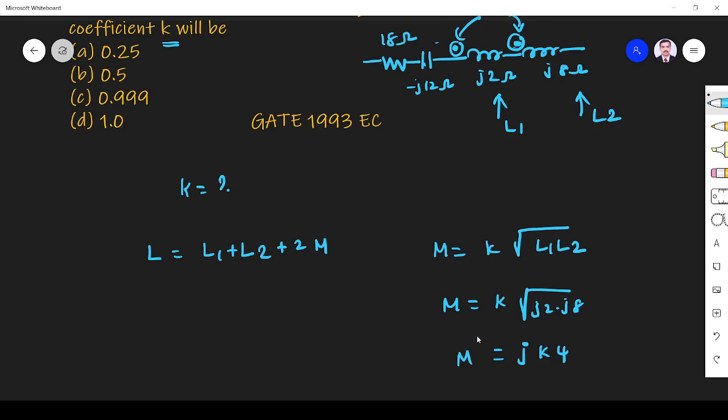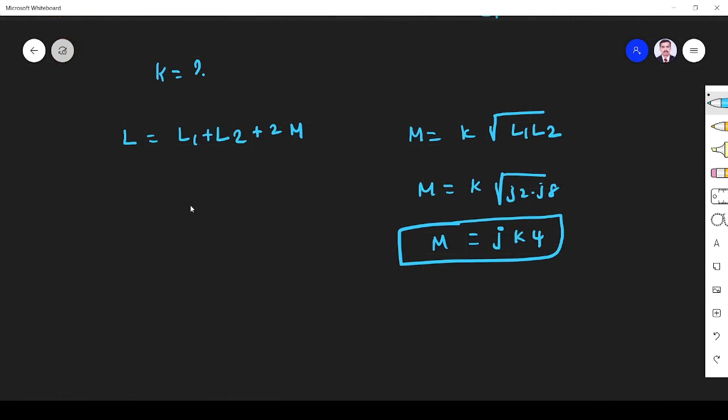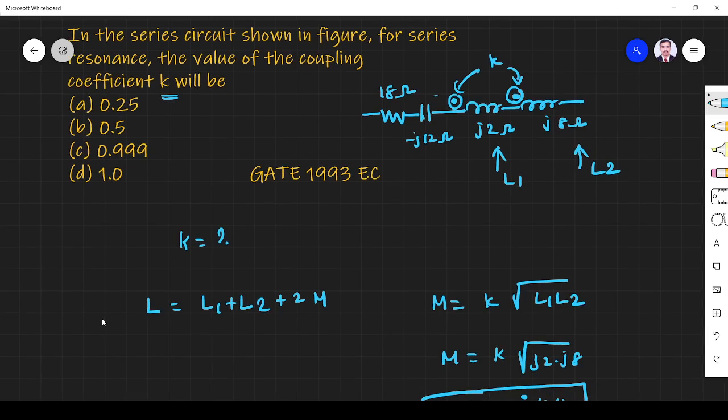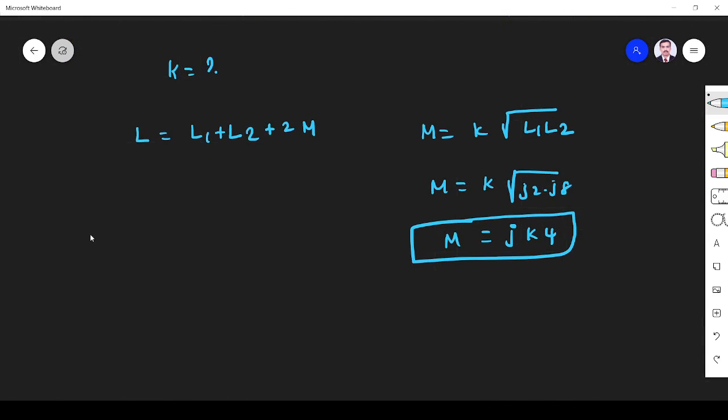Next, we know the circuit is at series resonance. At resonance, the magnitude of XL equals the magnitude of XC.